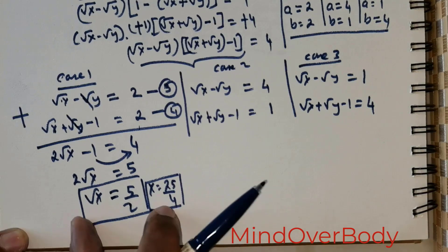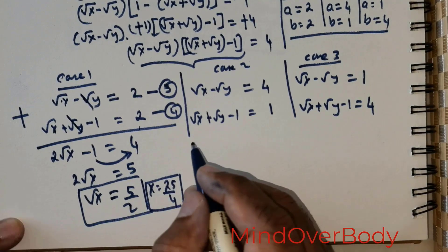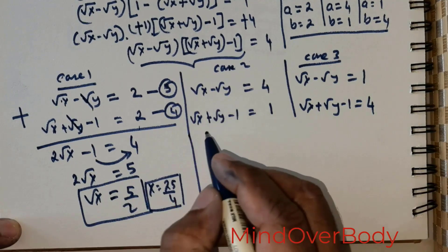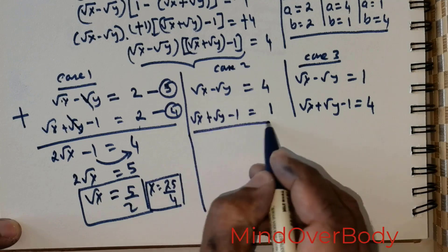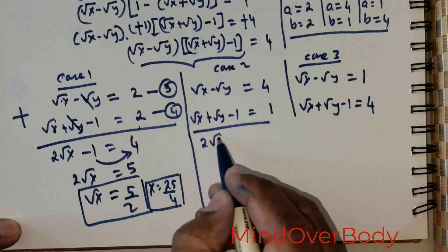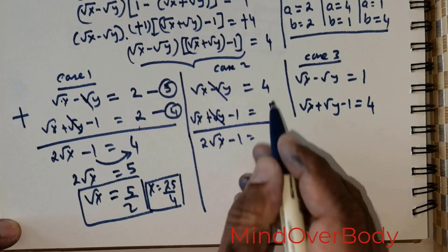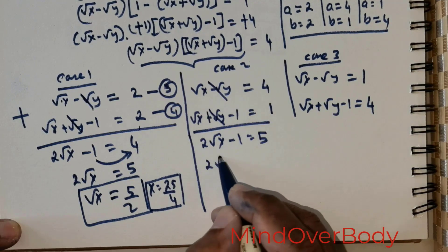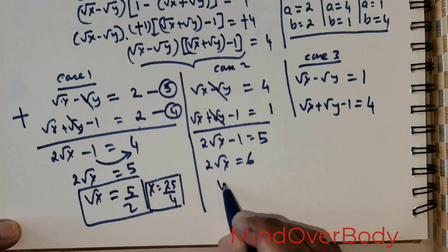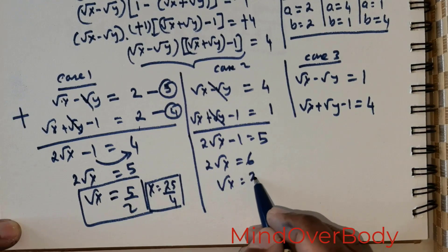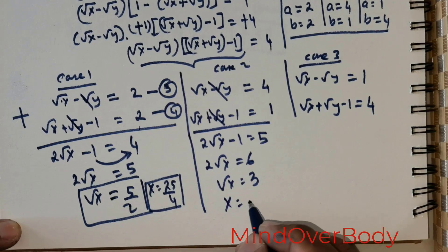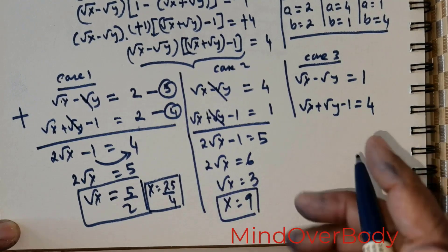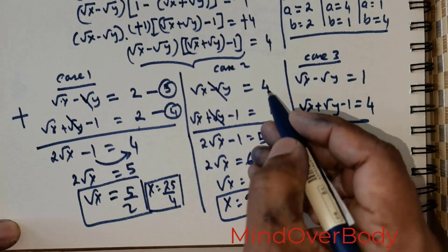For Case 2, adding the equations gives 2 times root of x, y's cancel, and 4 plus 1 gives 5. So root of x equals 6 over 2, that's 3, and x equals 9. So I am getting two solutions: root of x equals 5 over 2 and root of x equals 3.